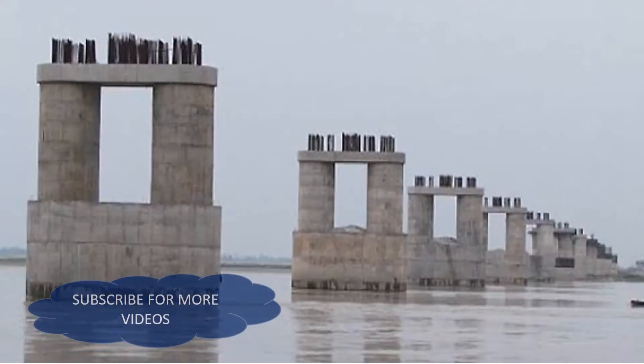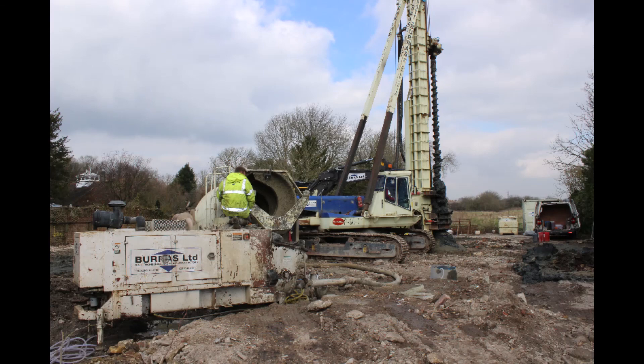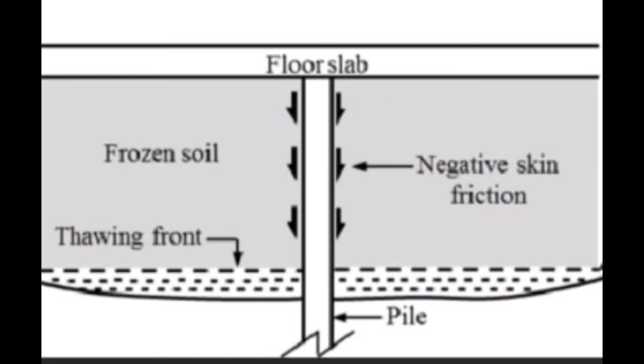Among all those features, end bearing piles also possess certain limitations. End bearing piles can only be constructed using heavy construction machinery and equipment. When end bearing piles are inserted into the soil strata, there are chances for the soil surrounding the piles to stick to the surface of the pile. This would result in negative skin friction, which reduces the performance of an end bearing pile.